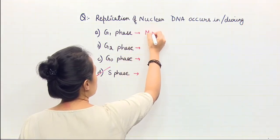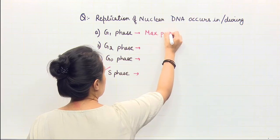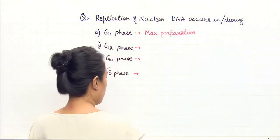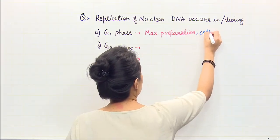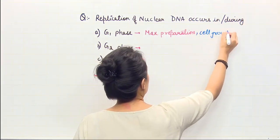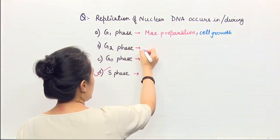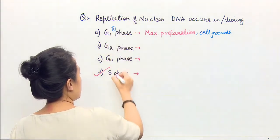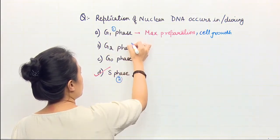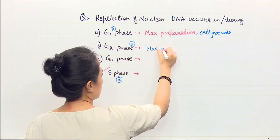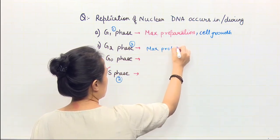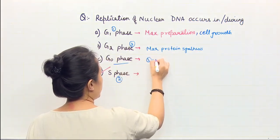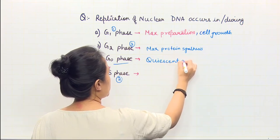What about G1 phase? G1 is the phase where maximum preparation happens. That means cell is undergoing cell growth. G2 is the one where it goes to S phase, then it goes to G2 phase where maximum protein synthesis happens.